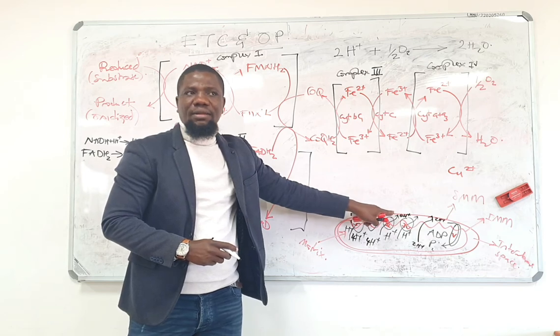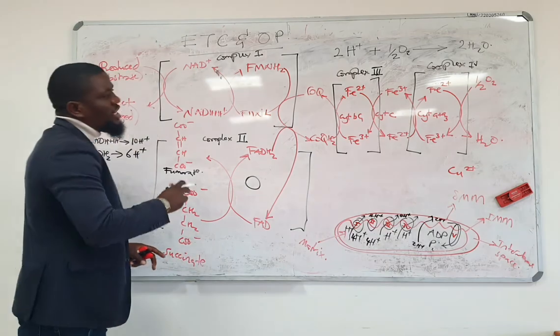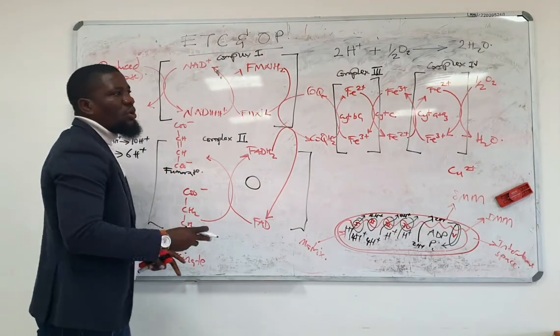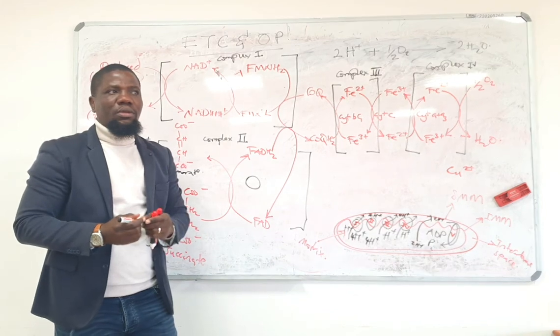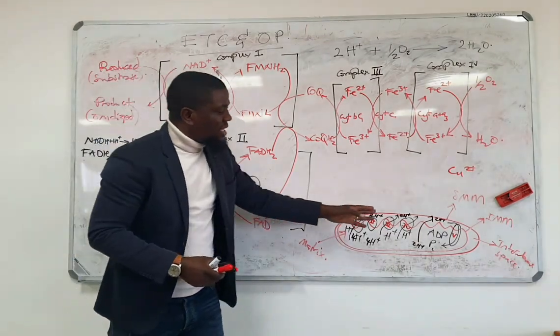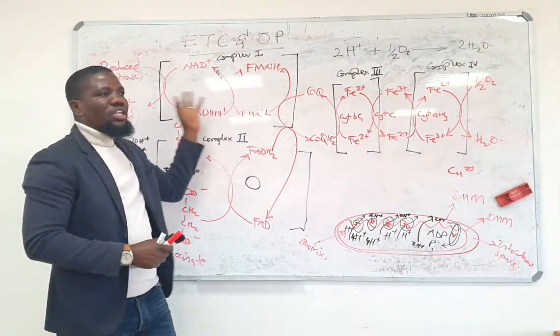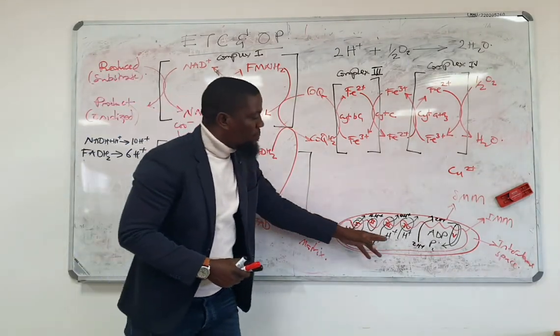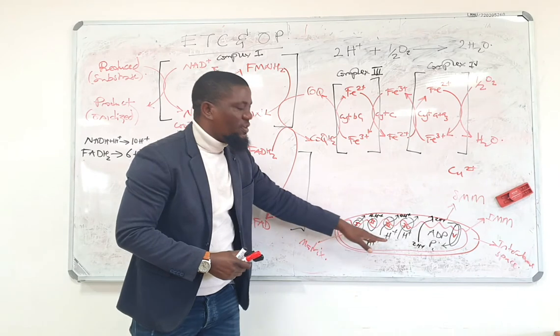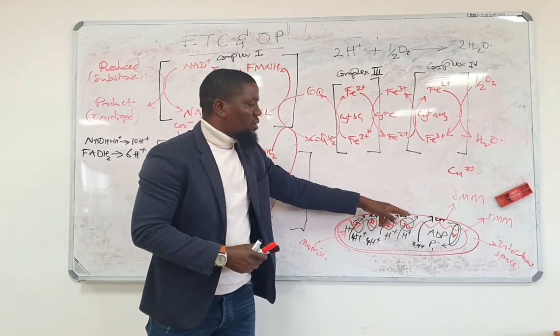Is that clear? Is that clear? Now, at this point, I will have shown you the first four complexes. As this reaction, the electron transport chain continues and continues, you discover that there will be more protons that are going to be moving from the matrix into the intermembrane space.